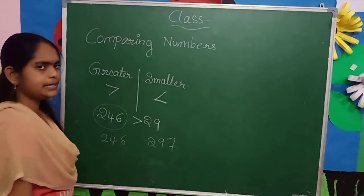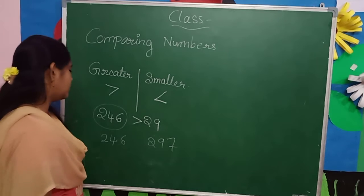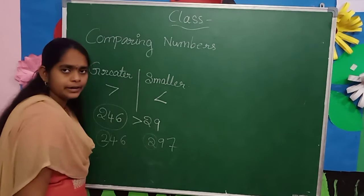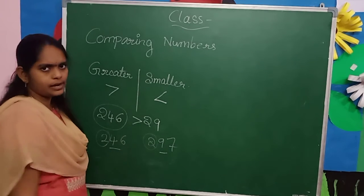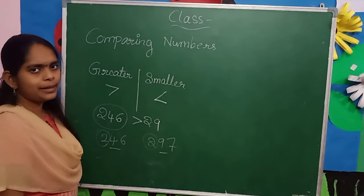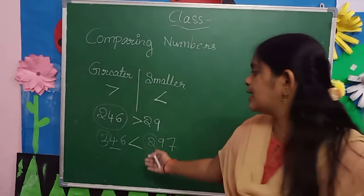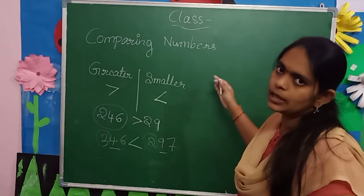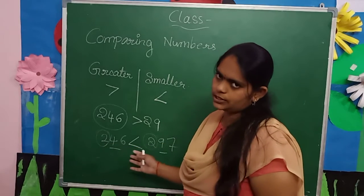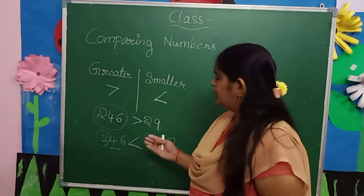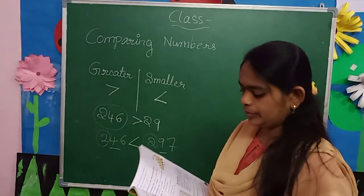Suppose both numbers are having three digits. We go to the place values. First, 200 and 200 — both are same. Next, 4 tens and 9 tens. 4 tens is less than 9 tens, so here we have to use the less than symbol. To compare numbers, first count the digits. If the digit count is the same, move to the next level and check place values. Compare each place value and use greater than or less than symbol accordingly.